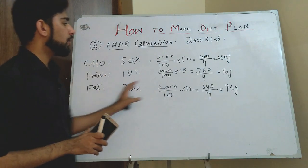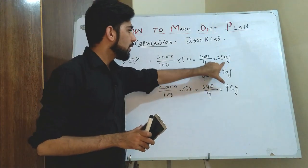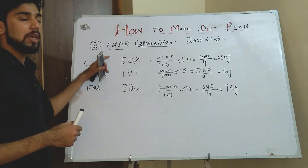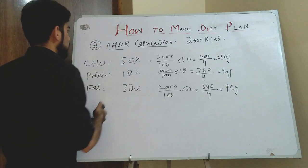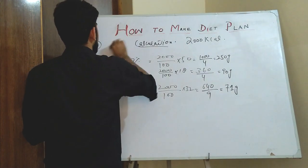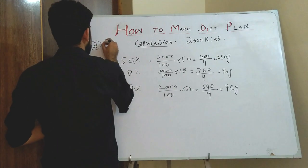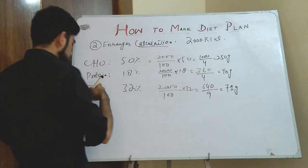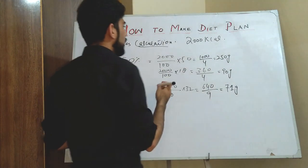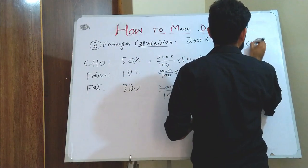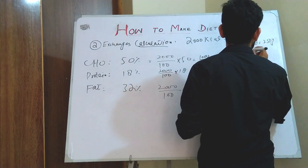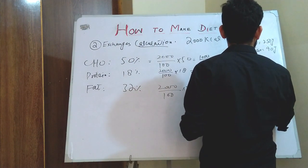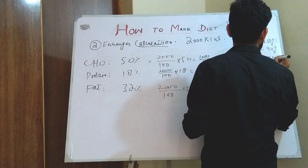Now we convert calories into grams, and the next step is exchanges calculation. That was our second step — AMDR calculation. The third step, one of the most important steps in diet planning, is exchanges calculation. Total carbohydrate from AMDR is 250 grams, protein is 90 grams, and fat is 71 grams.